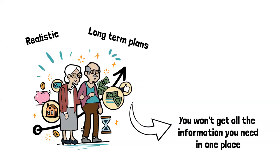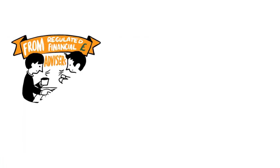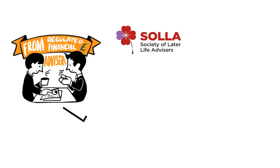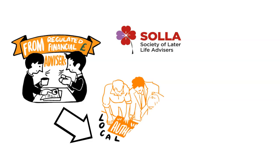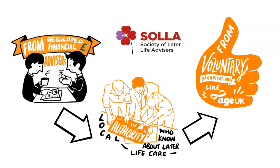You won't get all the information you need in one place. Consider talking to a financial advisor who specializes in later life advice. Look out for the SOLLA logo, the Society of Later Life Advisors. You could also seek information from your local authority or voluntary organizations about other allowances and discounts available to you.